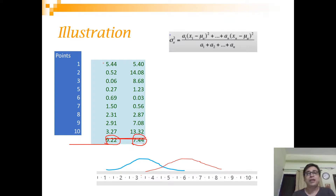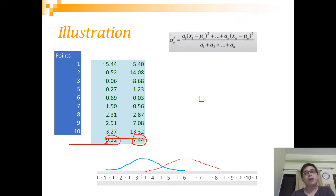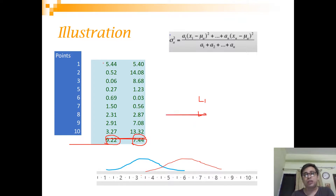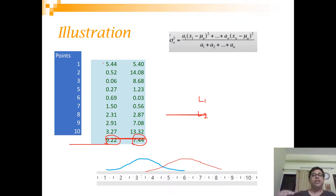This process will be repeated, and at every step we look at the likelihood value. The first step gives likelihood L1, then with the new distribution we calculate L2, then L3, and so on. We stop when there is a very small change from Ln-1 to Ln.